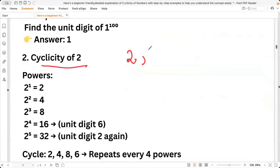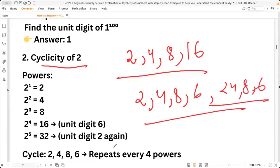2^1 is 2, square is 4, cube is 8, power 4 is 16 and it will repeat. The unit digit will go like 2, 4, 8, 6 in a block of four, repeating 2, 4, 8, 6.